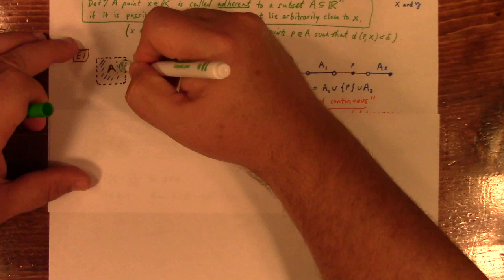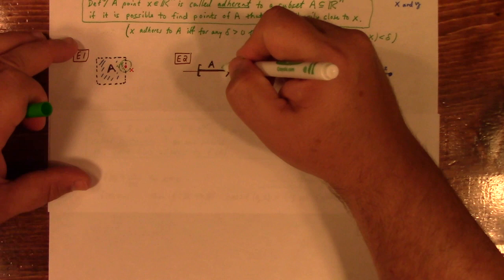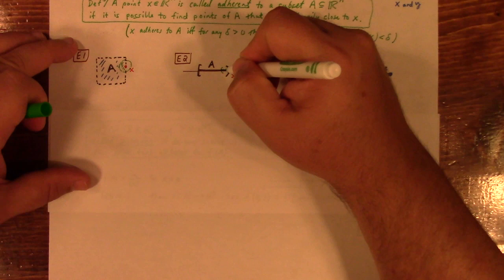Over here, if I take a delta, like a little ball around X like this, there's always these points over here in A, so definitely X is stuck to A.